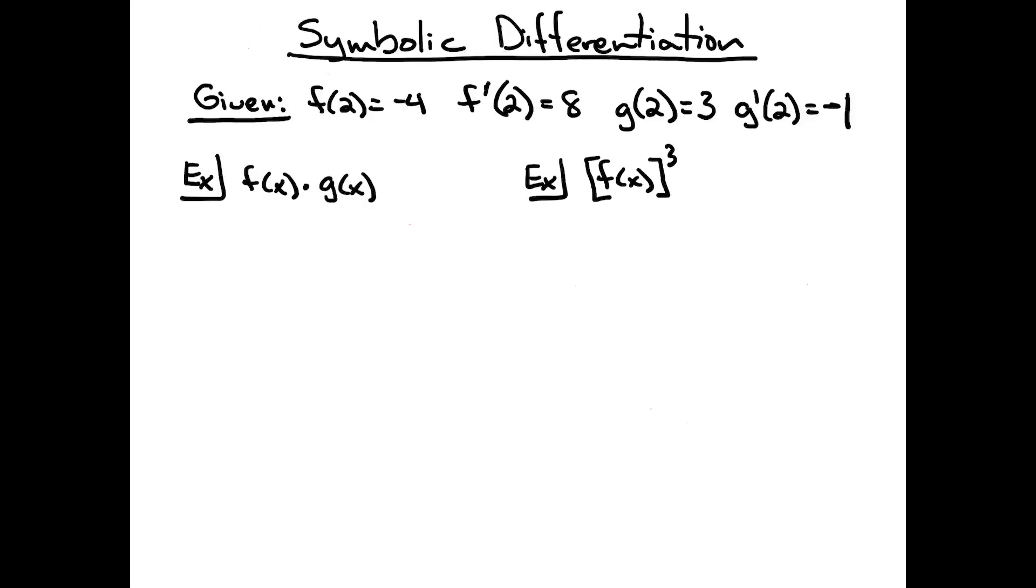Since it's basically two functions being multiplied together, I'm going to have product rule. So I'm going to have f of x, the first function, times the derivative of the second function, which would be g prime of x, plus the second function, g of x, times the derivative of the first function. And that is the derivative taken symbolically.